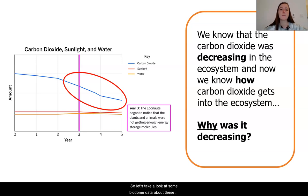Let's take a look at some biodome data about these different populations to see if we can understand a little bit more about why cellular respiration is not happening as often and why not as much carbon dioxide is being produced.